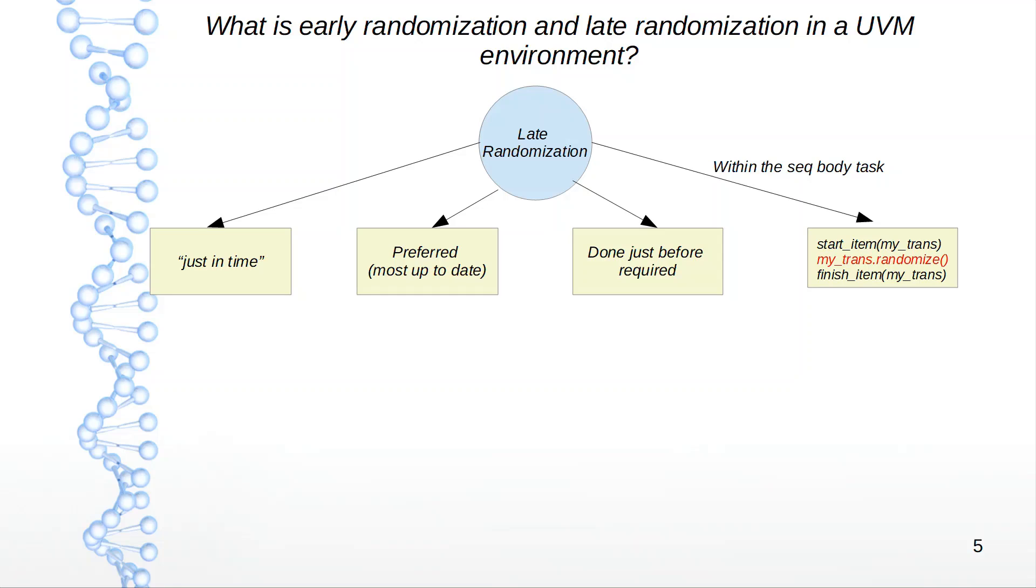The sequencer, depending on the priority, gives access or permission to the sequences. If you call the randomization right after start_item, then you ensure that when you randomize, everything is based on the current testbench environment. So this is the preferred way, essentially.